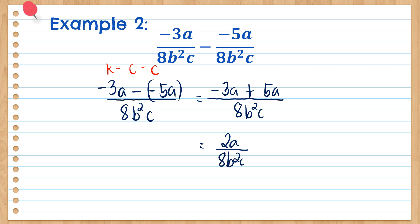For our final step, we simplify the answer. Is there a common factor among the numerator and denominator? We have 2 and 8, both divisible by 2. 2 divided by 2 is 1, and 8 divided by 2 is 4. So the final answer for example number 2 is A all over 4B squared C.